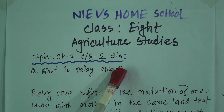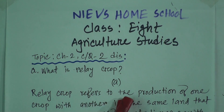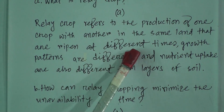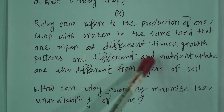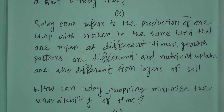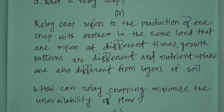Number A: What is relay crop? Relay crop refers to the production of one crop with another in the same land, where they are reaped at different times. Growth patterns are different and nutrient uptake are also different from layers of soil. These two kinds of crops are totally different from each other. By cultivating these, farmers' land fertility also increases.